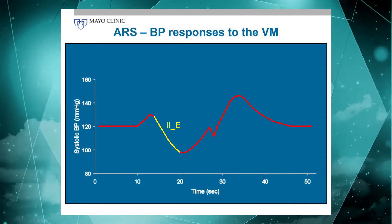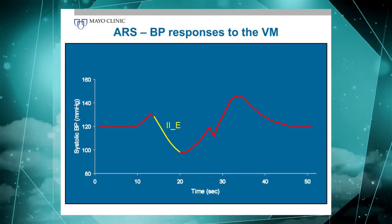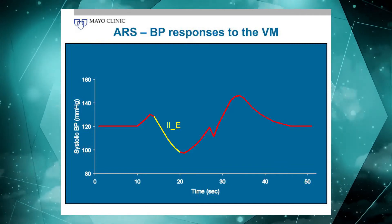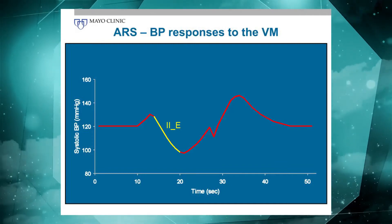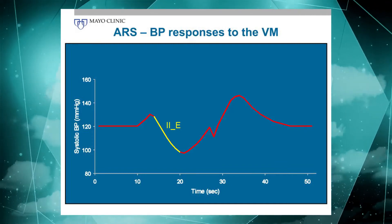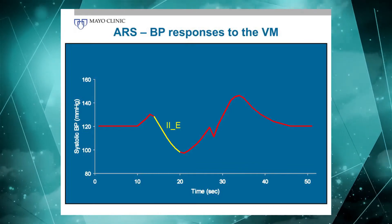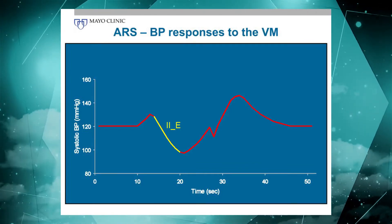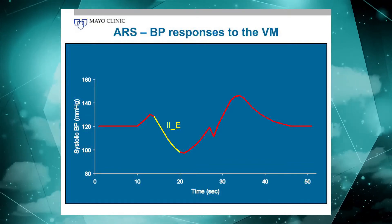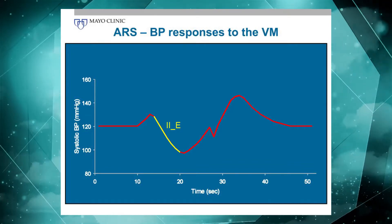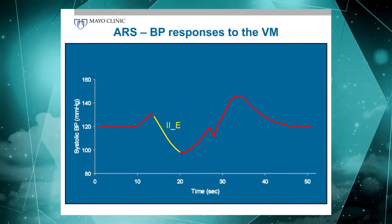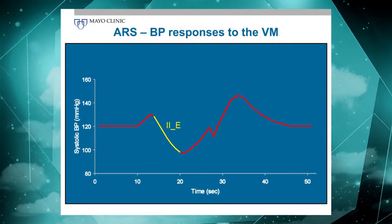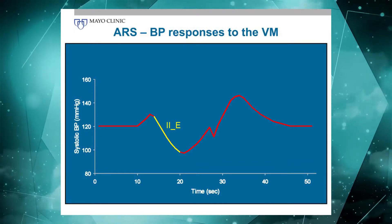Early phase two is the subsequent decline in blood pressure. That is caused by increased intrathoracic pressure, which leads to decreased venous return, decreased cardiac filling, decreased stroke volume, and blood pressure continues to go down. It would continue to do so unless something happened — and this is where the adrenergic nervous system comes in.